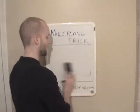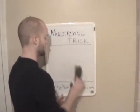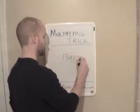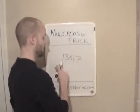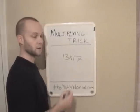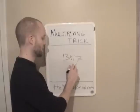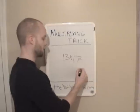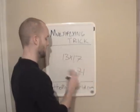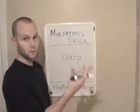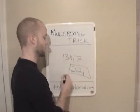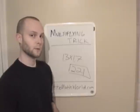We'll do one more just so everyone understands. We'll do 13 times 17. Again, the tens digits are the same, and 3 plus 7 is 10, so we can do the trick. 3 times 7 is 21, and 1 times the next highest number, which is 2, is 2. So 13 times 17 is 221.